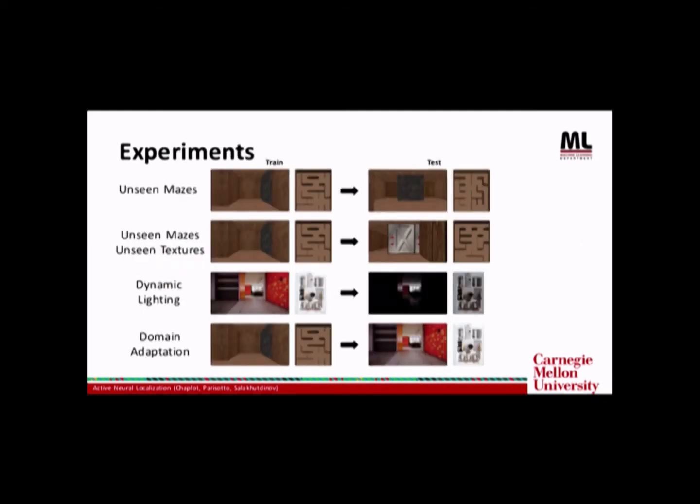So we do a variety of experiments. The first one is testing on unseen mazes in the Doom game engine. The second is unseen mazes and unseen textures for landmarks. The third is dynamic lighting experiment where we train the agent in the Unreal engine and test it in the same map but without lights. And the fourth one is domain adaptation where we train the agent in the Doom game engine but test it on the Unreal engine.